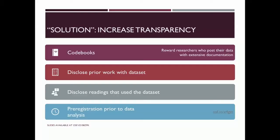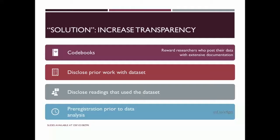There are sort of two routes we can go. We can increase transparency. One simple thing not currently done in our field is providing links to code books for publicly available data — our research articles often don't tell people what variables were available or how they were coded. We should also be disclosing the times we've used that data set before, regardless of whether it was published. If I ever use the Health and Retirement Study, somewhere in my documentation I should say, 'here are the four other studies I looked at these data for.' More difficult might be disclosing the times we've read about a data set — finding some way to track and catalog how many times you've encountered it and how that might be biasing your analytic choices.